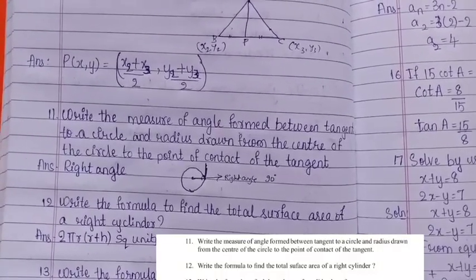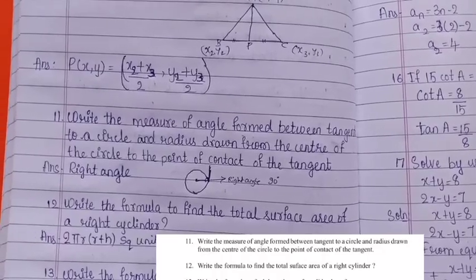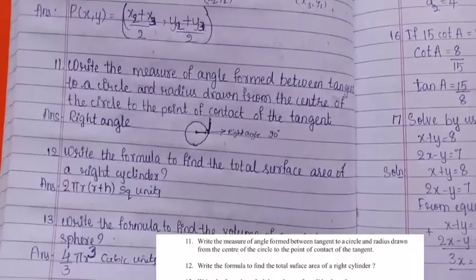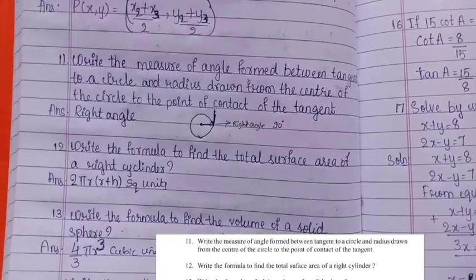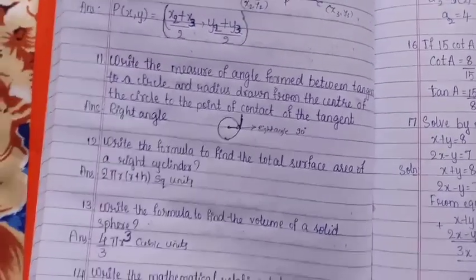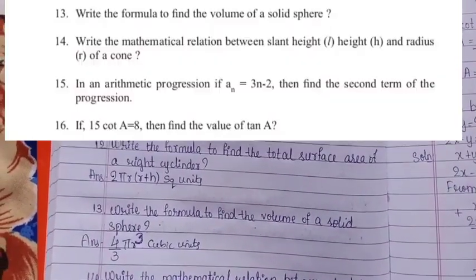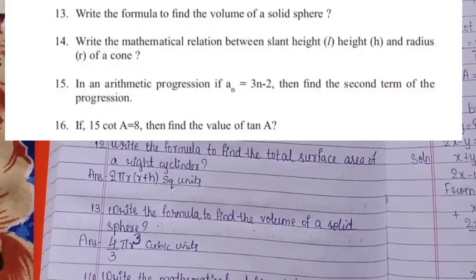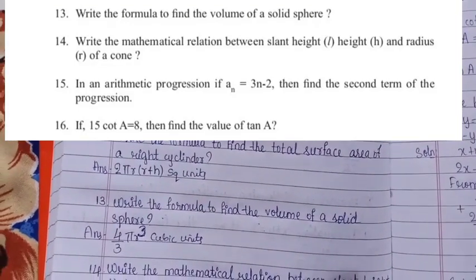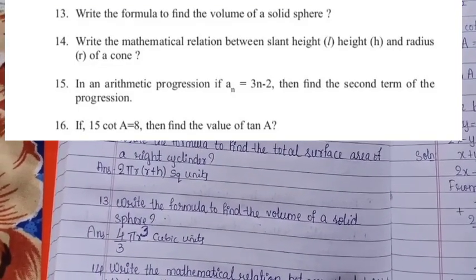Write the formula to find the total surface area of a right cylinder: 2πr(r + h) square units. Write the formula to find the volume of a solid sphere: volume is always in cubic units, therefore 4/3 πr³ cubic units.